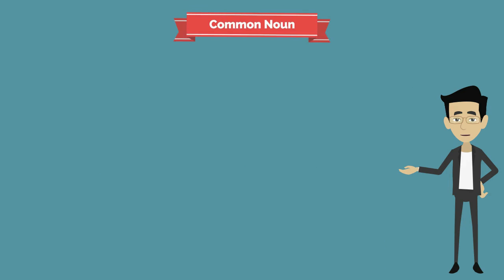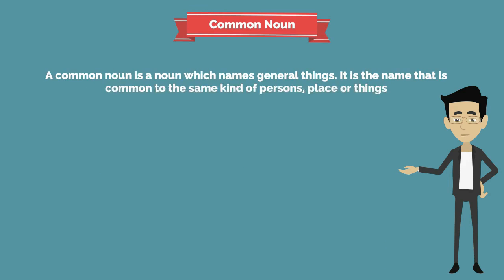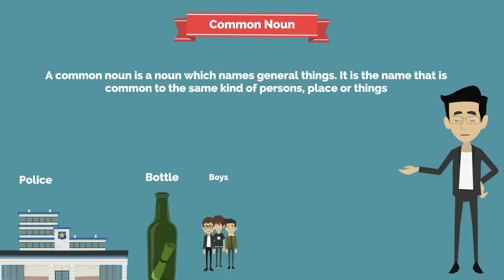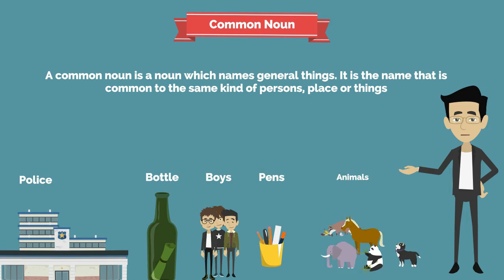The next type is the common noun. A common noun is a noun which names general things — the name that is common to the same kind of persons, places, or things. Examples: police, bottle, boys, pens, animals, and so on.